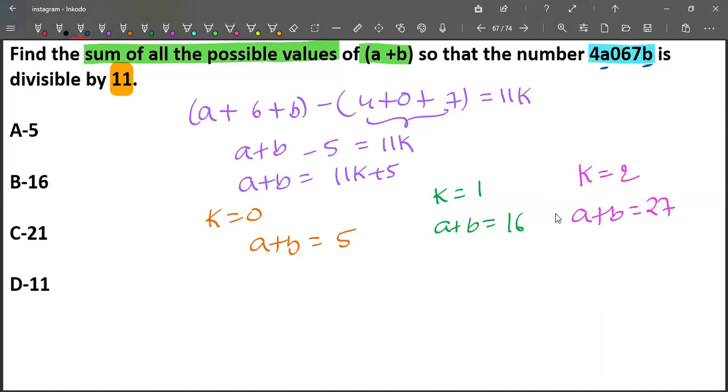So what are the maximum values of a and b? Maximum value of a is 9 and maximum value of b is 9. So maximum value of a+b should be 18. Therefore 27 is not possible, so only 5 and 16 are possible.